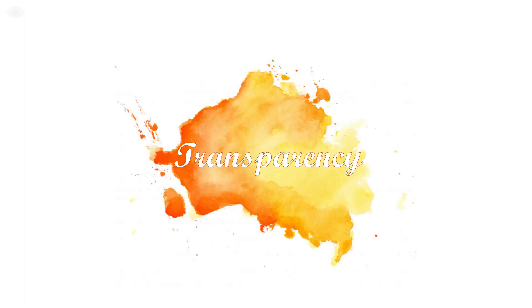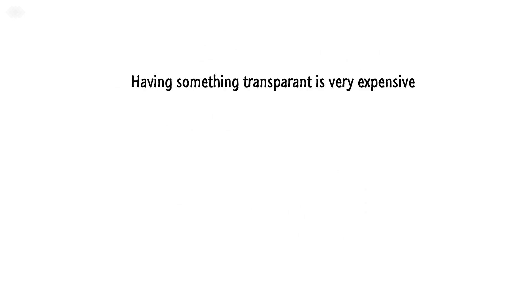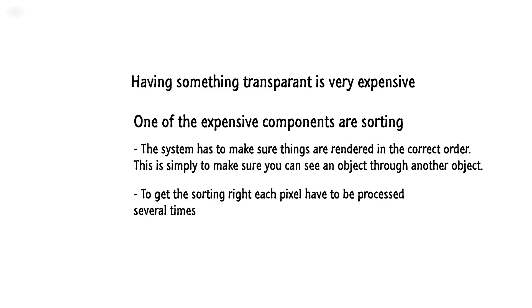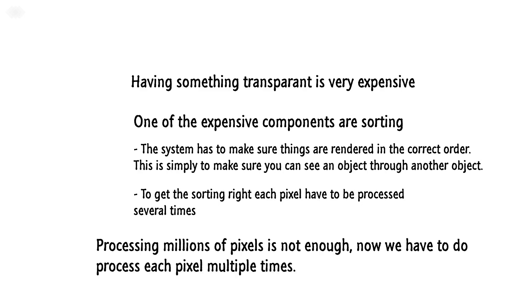Transparency. One of the most expensive operations you can do in a shader is to have something transparent. There are many different reasons why this is expensive, one of them being sorting — the system has to make sure things are rendered in the correct order, simply to ensure that you can see an object through another object. In order to get the sorting right, each pixel needs to be processed several times. Like processing a couple of millions were not enough, now we need to do them several times.